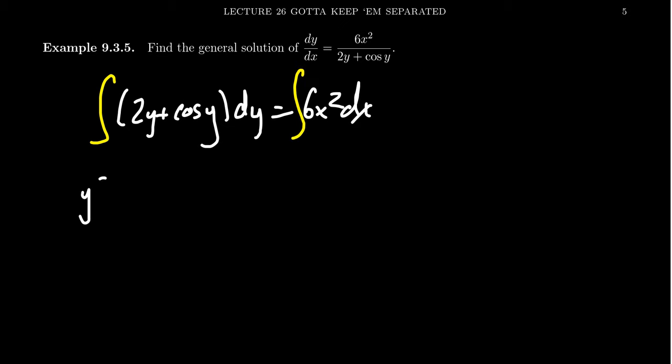On the left-hand side, you're going to get y squared plus sine of y equals on the right-hand side, we're going to get 2x cubed plus a constant.